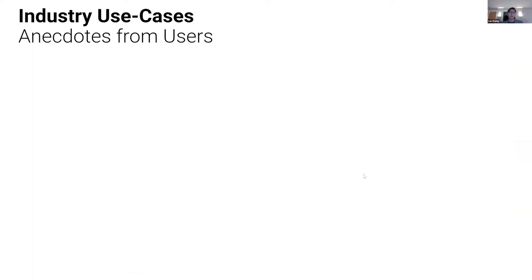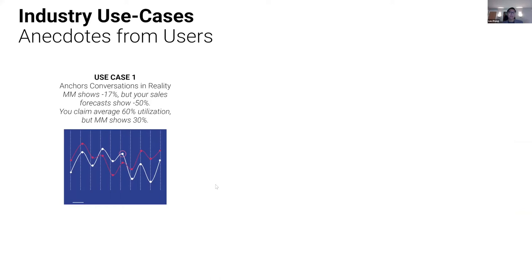Why is this data useful? The most useful application is that it anchors conversations in reality. If we're showing a 16–17% decrease in utilization but a VP of sales is forecasting a 50% decrease in sales, there's a disconnect you can check with actual data. We've talked to VC firms who say when evaluating machine shops, people often claim 60–70% utilization, but when we show 30–35%, that's a more realistic number backed by our methodology for collecting the data.